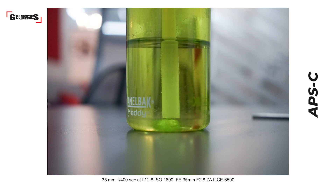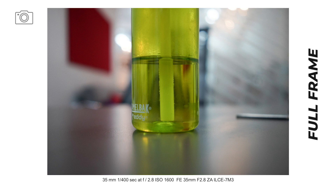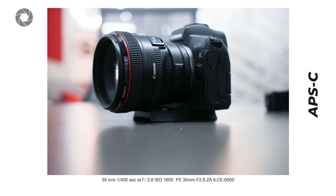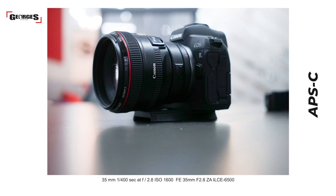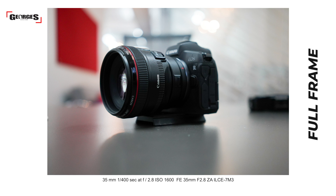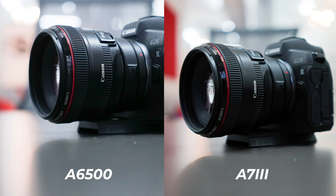Comparing the two images, you can see that the full frame shot has a clear difference in depth of field. For this test we used the same lens on both cameras, and for the A6500 we pulled the camera back to replicate similar framing to the A7 III. The background separation is more prominent on the A7 III, although the bokeh doesn't look too bad on the A6500 — there is a clear difference between the two.